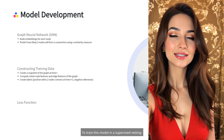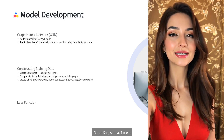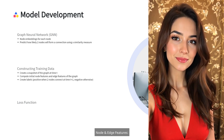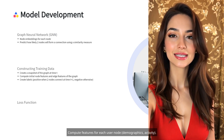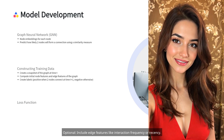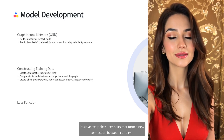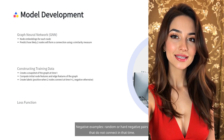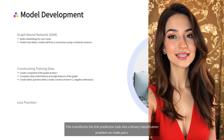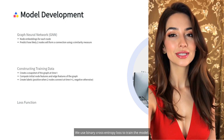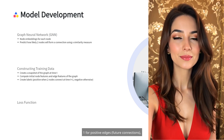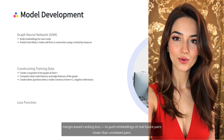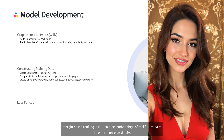To train this model in a supervised setting, we take a snapshot of the social graph at time t. Nodes are users; edges represent existing connections. We compute features for each user node — demographics, activity — and optionally include edge features like interaction frequency or recency. For label creation: positive examples are user pairs that form a new connection between t and t+1; negative examples are random or hard negative pairs that do not connect in that time. This transforms the link prediction task into a binary classification problem on node pairs. We use binary cross-entropy loss, with one for positive edges (future connections) and zero for negative ones. For better performance, we can also use contrastive loss or margin-based ranking loss to push embeddings of real future pairs closer than unrelated pairs.